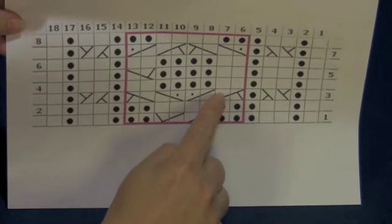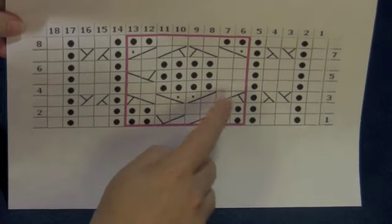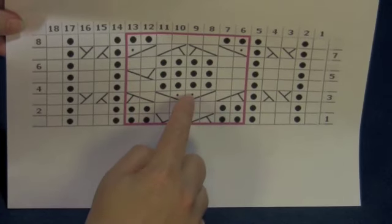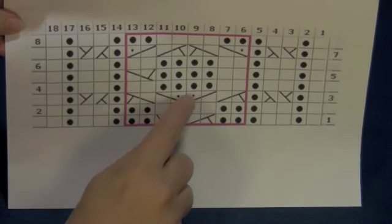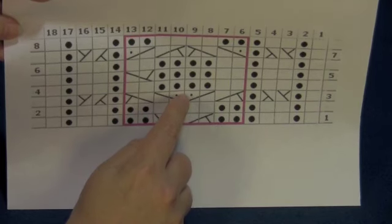So we're going to put those two stitches on a cable needle, hold it back, knit the next two stitches, and then we're going to purl those stitches off the cable needle.